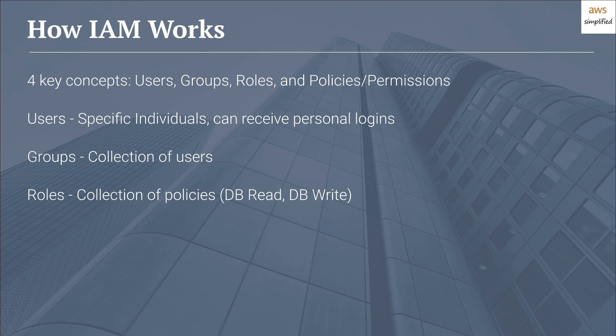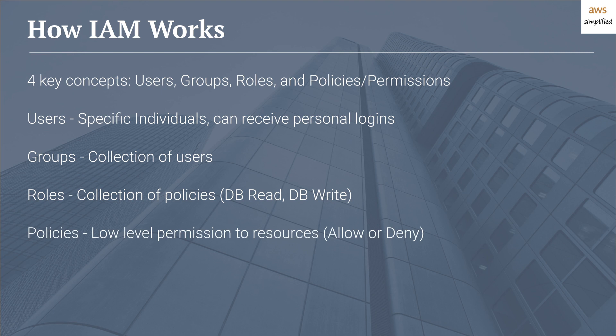Roles have a slight nuance in that they're typically not directly tied to individual users and are meant to be assumed by anyone who needs them. For instance, you can use roles to allow users within a different AWS account to access one of your DynamoDB tables by creating a role with the right permissions and granting them the ability to assume that role. Policies are really the bread and butter of IAM — they define the specific low-level permissions for access to AWS resources, and there are two variations: allow or deny.